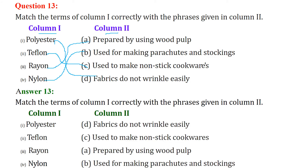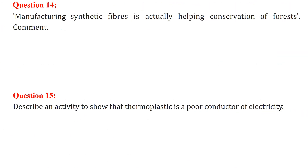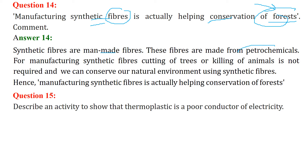Manufacturing synthetic fibers is actually helping conservation of forests. If you want to make natural fibers, you have to cut trees, depleting the forest. But when synthetic fibers are made artificially using petrochemicals, the forests are left intact. Synthetic fibers are manmade and made up of petrochemicals; for manufacturing them, cutting of trees or killing of animals is not required. So we can conserve our natural environment by using synthetic fibers.